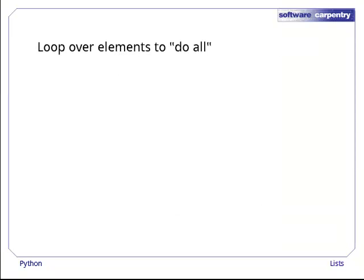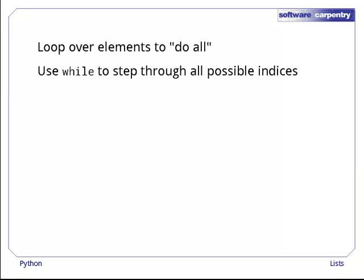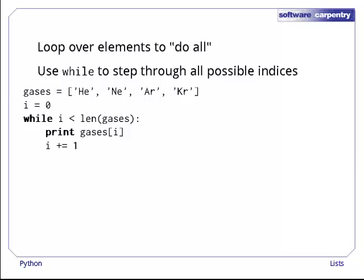Lists and loops naturally go together. We almost always use a loop of some kind to operate on all the list's elements. For example, we can use a while loop to step through the indices of a list to get each of its elements in turn. Here's a short program that prints the noble gases one by one. We start the loop variable i at zero, which is the first legal list index. Each time through the loop, we add one to it, so that we move through the set of legal list indices in order. We keep going as long as i is less than the length of the list, i.e. as long as it's a legal index. And sure enough, this loop prints out each list element in order.